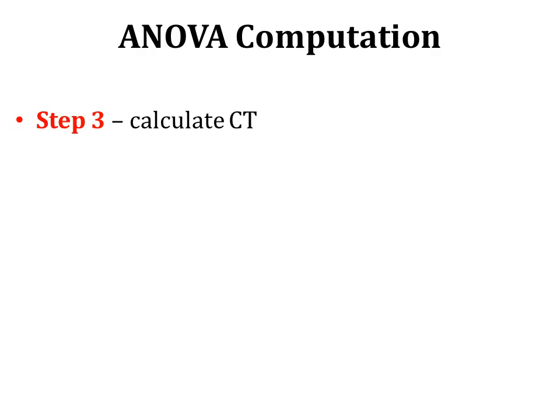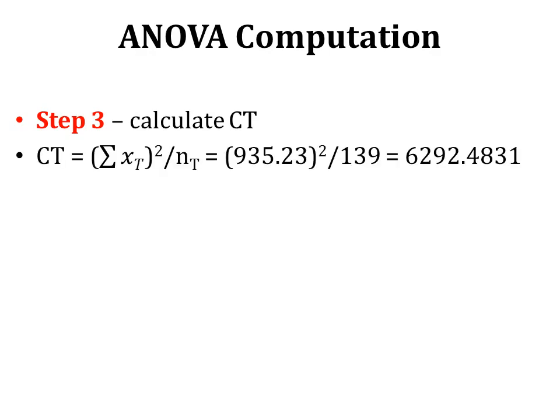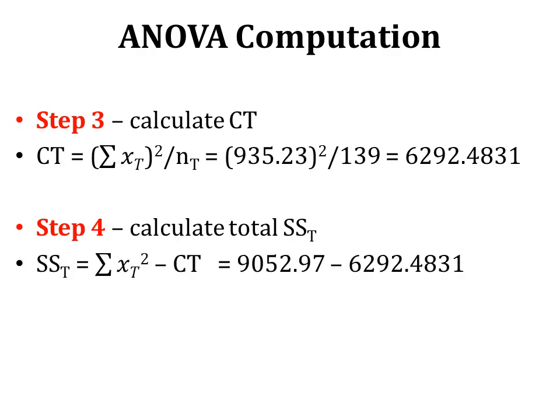Step 3 is to calculate the correction term, using the formula: (summation xt)² / nt. So we compute 935.23² / 139 = 6292.4831. Step 4 is to calculate the total sum of squares using the formula: summation x square minus the correction term. So 9052.97 − 6292.4831 = 2760.4869. This is our total sum of squares.